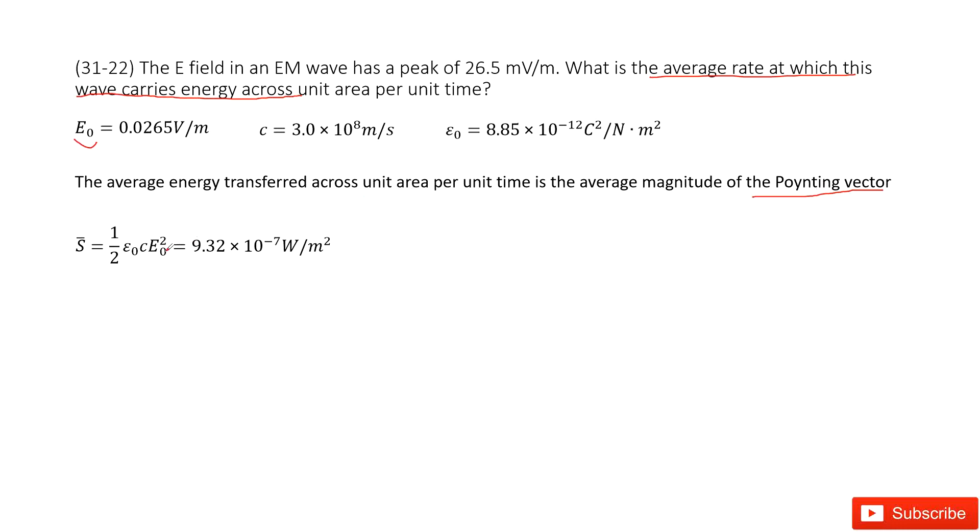So for the pointing vector, we have the equation: one half epsilon naught C E naught squared. You can see C and epsilon naught are constants. You can check your textbook. Now you can see all the quantities are given, so you input all the quantities and get the answer.